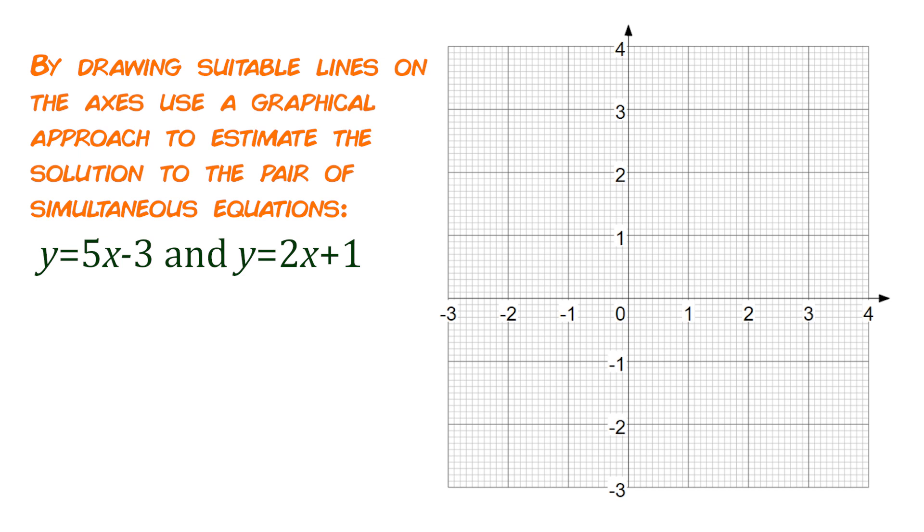Lots of different ways you can draw these lines. I think the way I'm going to show you today I'm going to use my knowledge of y equals mx plus c. So that first one y equals 5x minus 3, I know that that's going to be passing through the y-axis at minus 3 because of the minus 3 on the end and the 5x tells me that it's got a gradient of 5, so that tells me that for every one unit that I go across on the x-axis I'm going to go up 5 on the y-axis.